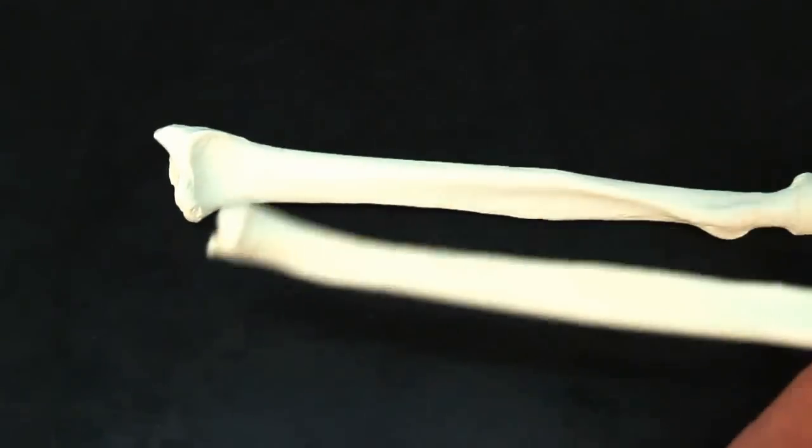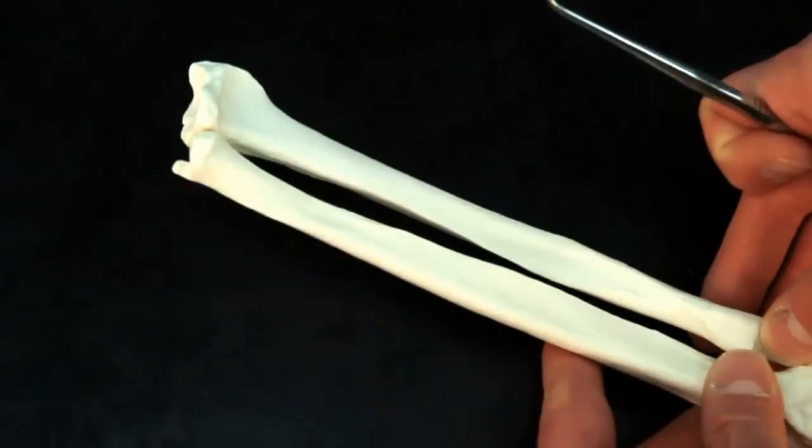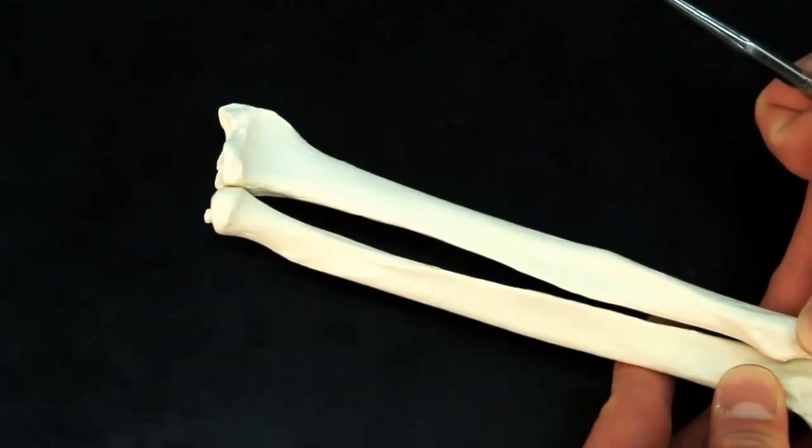You can see it articulates with the ulna. So the head of the radius goes to the radial notch, the head of the ulna goes to the ulnar notch, forming the two bones of your forearm.